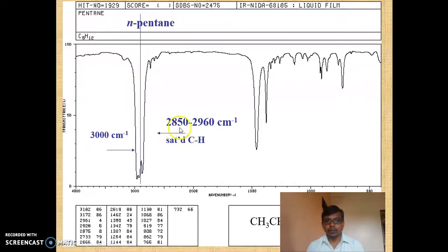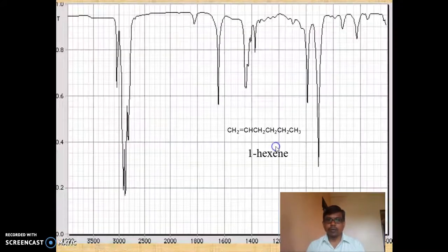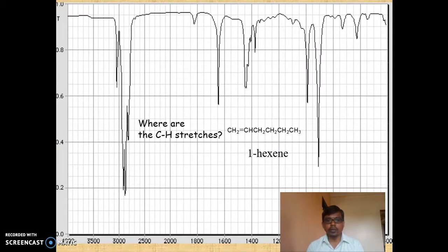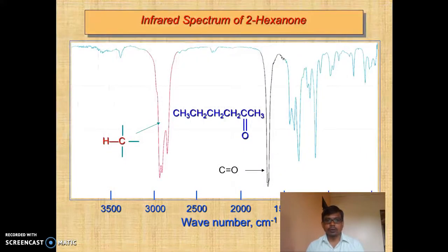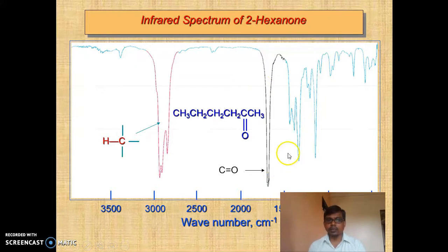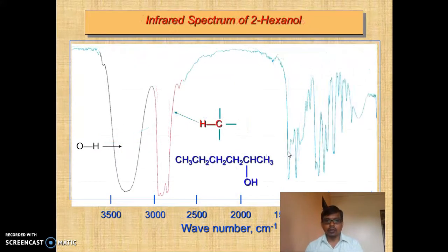For cyclohexane as well, you will get the peaks just below 3000 cm⁻¹. These are for bending vibrations. For 2-hexanone, you are getting a peak at about 1700 cm⁻¹, which clearly indicates there could be the presence of a carbonyl group.